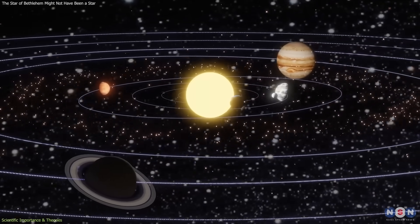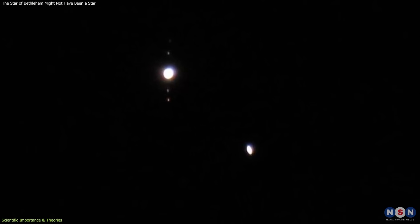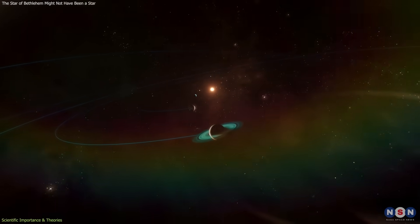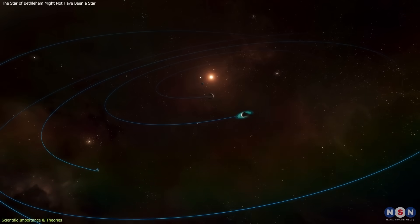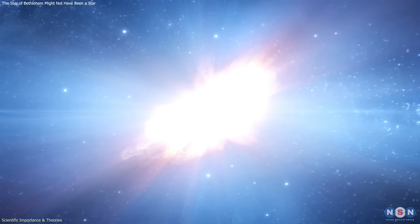Planetary conjunctions, such as alignments involving Jupiter and Saturn, can be visually striking and astrologically significant. However, planets do not appear to guide movement or stop over specific locations. Novi and supernovae can produce sudden brightness, but remain fixed relative to the background stars.